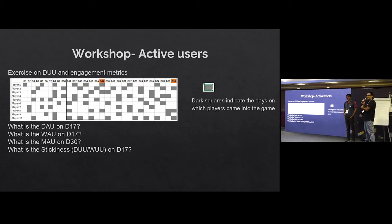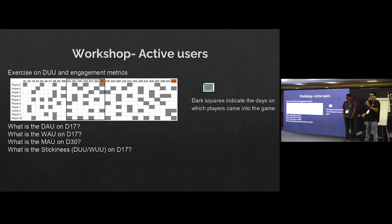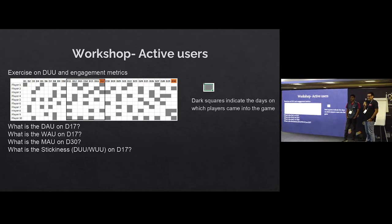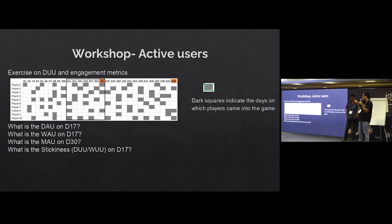Why are we looking at stickiness? The strategy of the game depends on this metric. If the same players are coming over and over again, you have one kind of strategy. But if your engagement is very low and you're getting a lot of new installs with a lot of churn, you need to deploy another kind of strategy. Your strategy as a PM or game maker will differ based on this metric — that's why it's important.